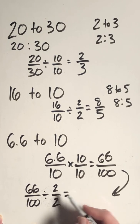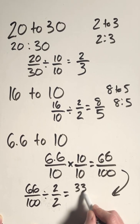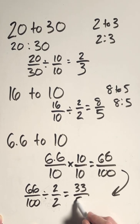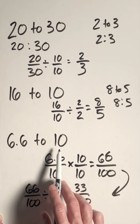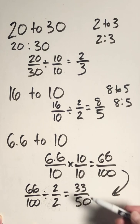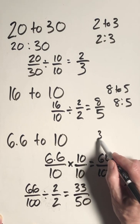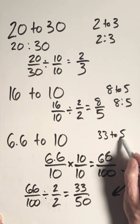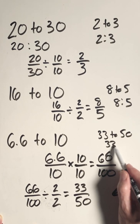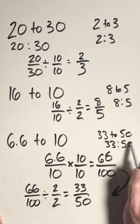66 divided by 2 is 33. 100 divided by 2 is 50. So 6.6 to 10 is a ratio that is equal to 33 to 50, which we could have written using the word 'to', and we could have also written it using the colon.